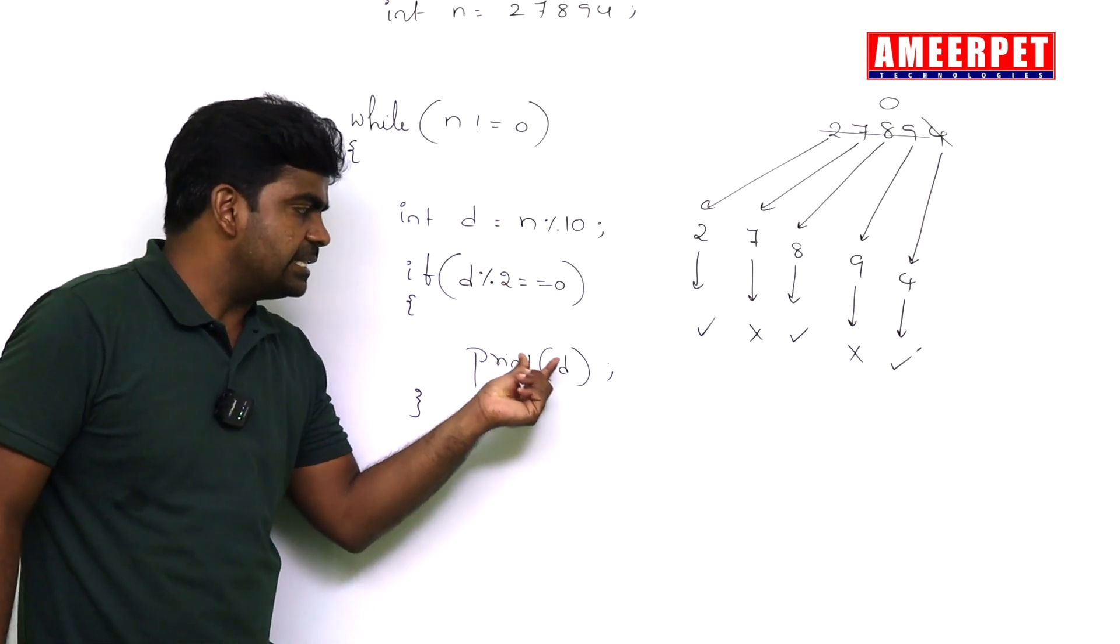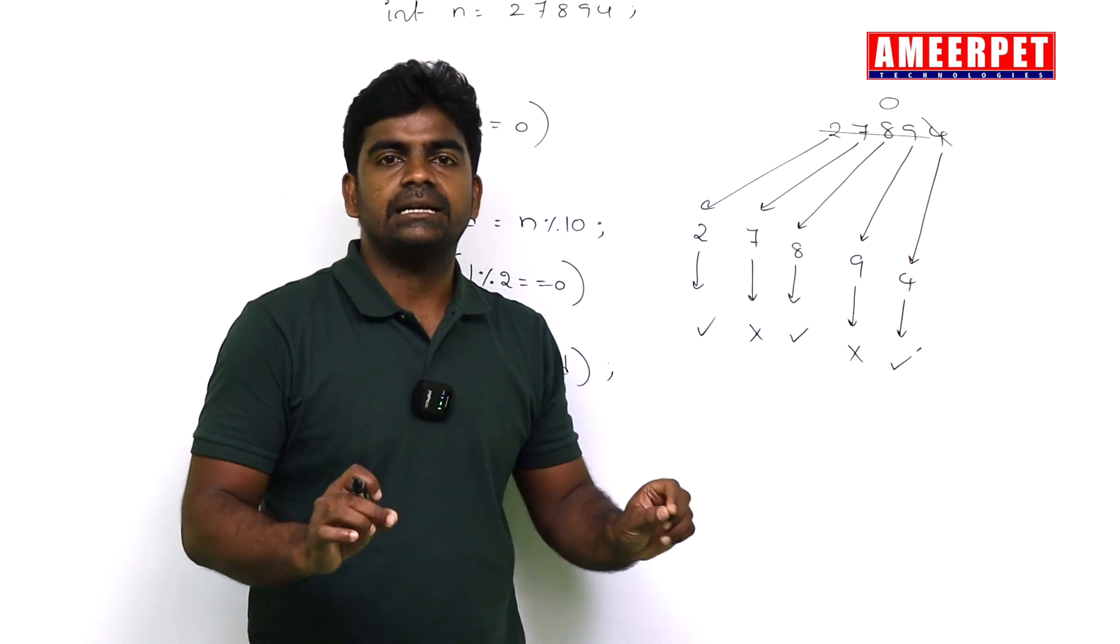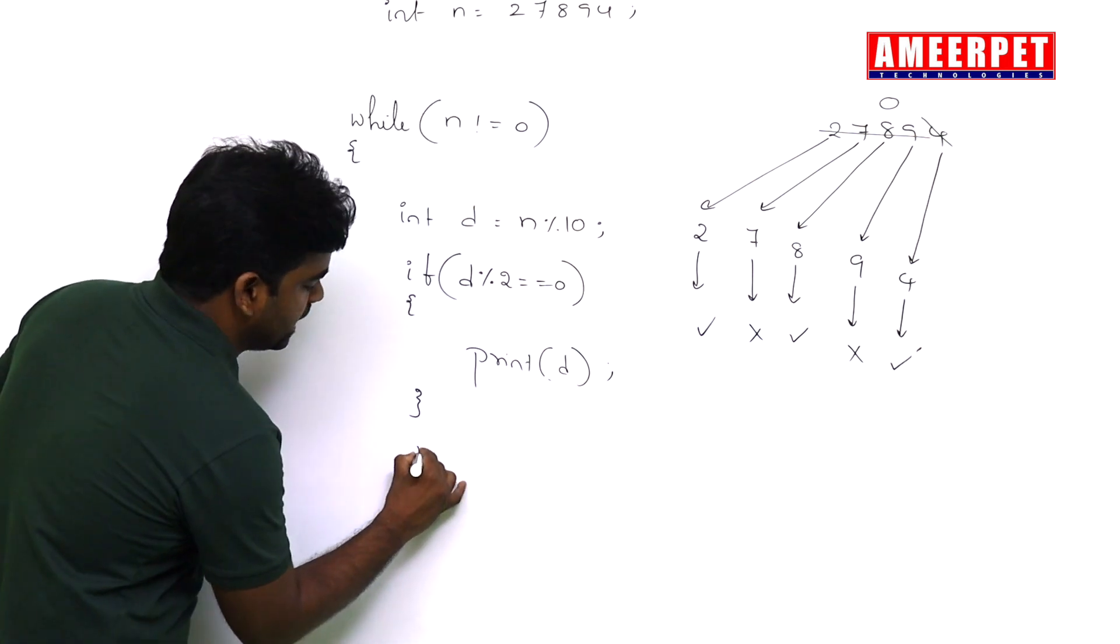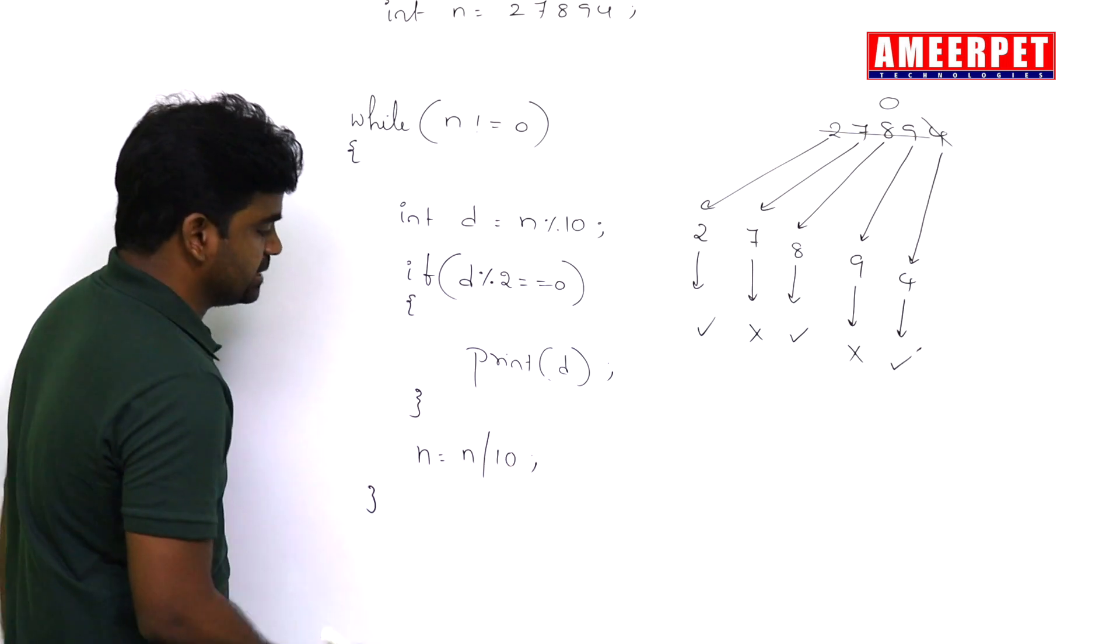If it is an even digit, then only print. After printing the digit, what is the next step? Remove that digit. How to remove the digit? Just n equals n divided by 10. It will remove that digit.